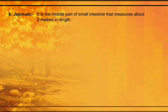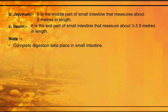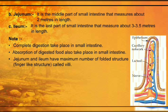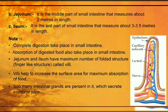The jejunum is about 2 meters in length. In the jejunum and ileum, finger-like structures are present called villi. Villi help to increase the surface area for maximum absorption of food. The small intestine measures about 3 to 3.5 meters in length. Complete digestion and absorption take place in the small intestine, because jejunum and ileum have villi for maximum absorption. Many intestinal glands are present which secrete intestinal juice.